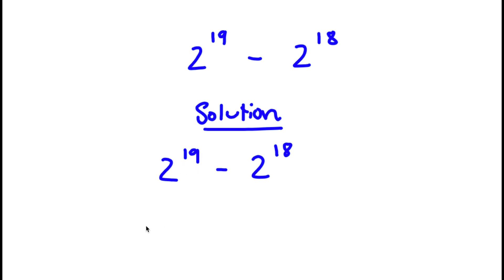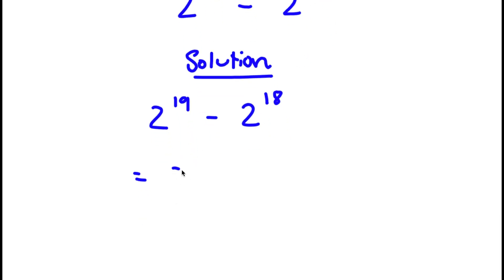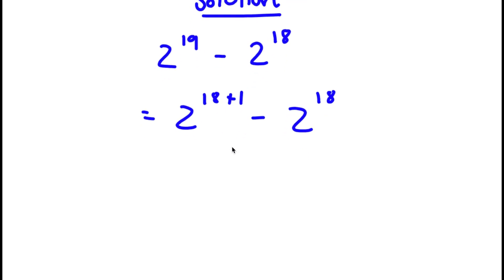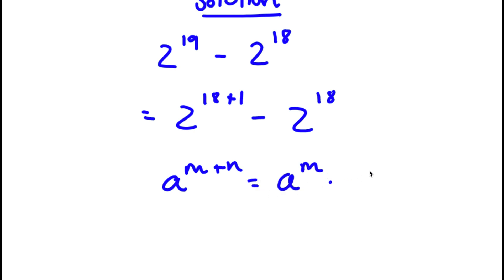Now, 2 to the power of 19 is the same thing as 2 to the power of 18 plus 1. So now I have 2 to the power of 18 plus 1 minus 2 to the power of 18. If I have something in the form a to the power of m plus n, this is equal to a to the power of m times a to the power of n.